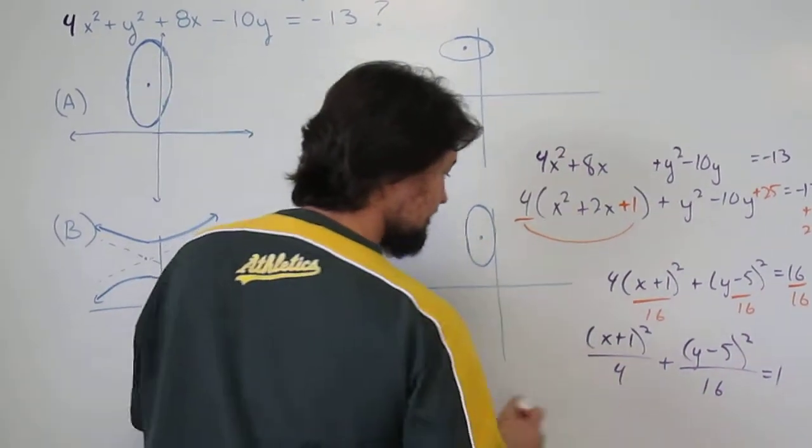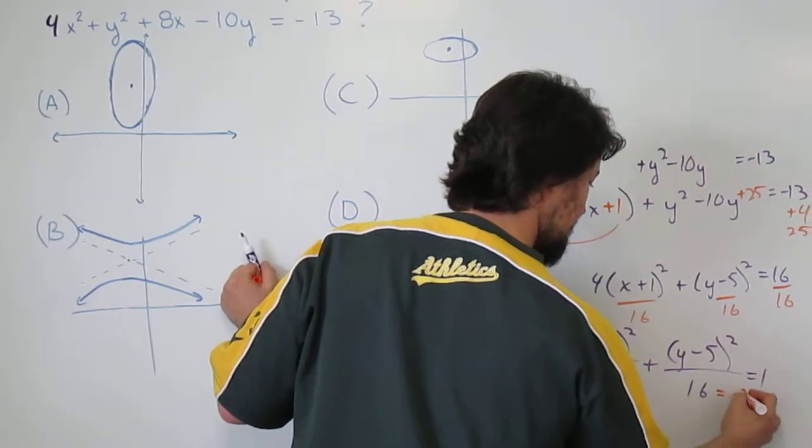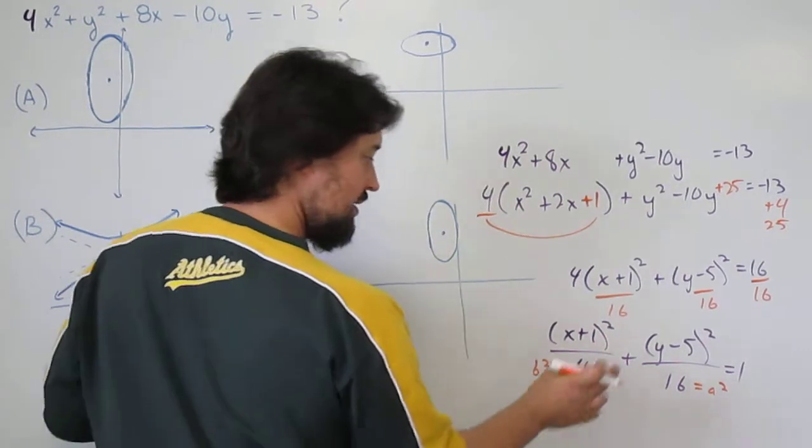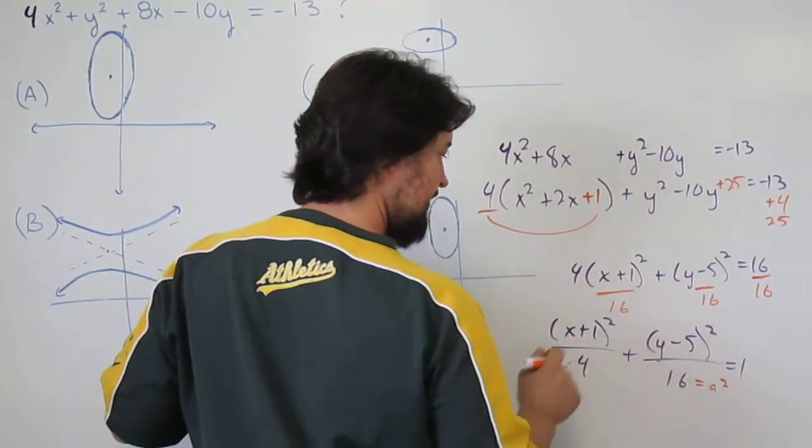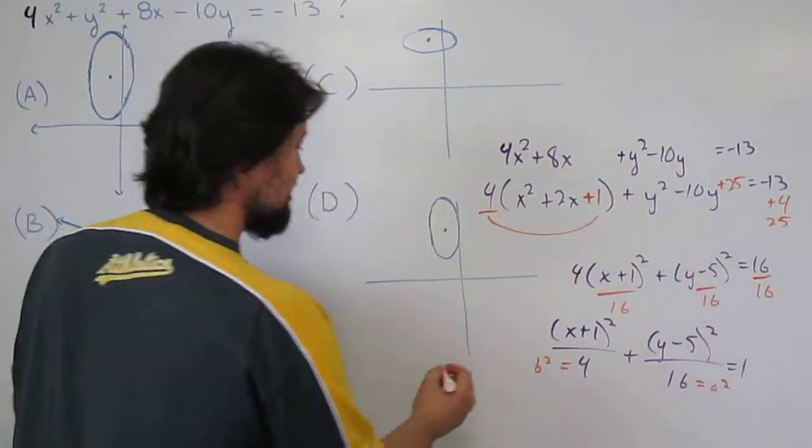The center is negative 1 comma 5, so we know our center is negative 1 comma 5. All of our answer choices though have a center of negative 1 comma 5.